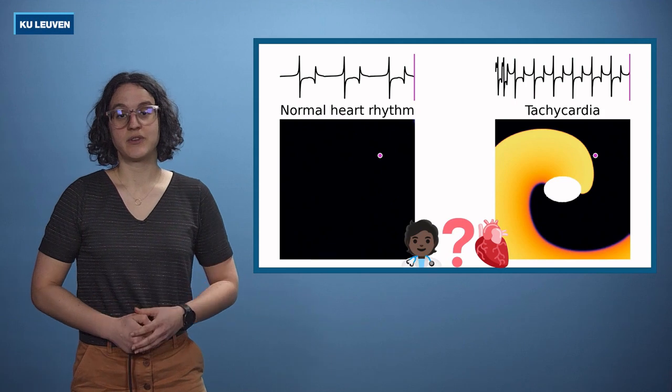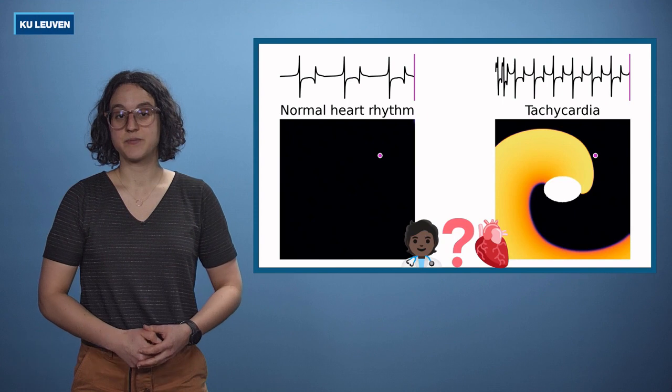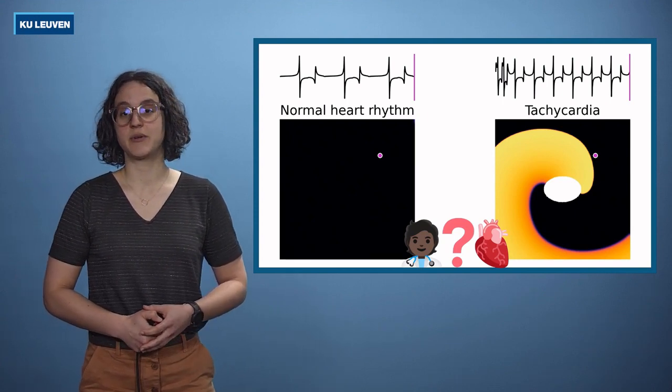To stop the rotating wave, cardiologists need to know the correct shape of the scar. In this project, we apply Bayesian inversion to quantify uncertainty when determining the shape of the scar.